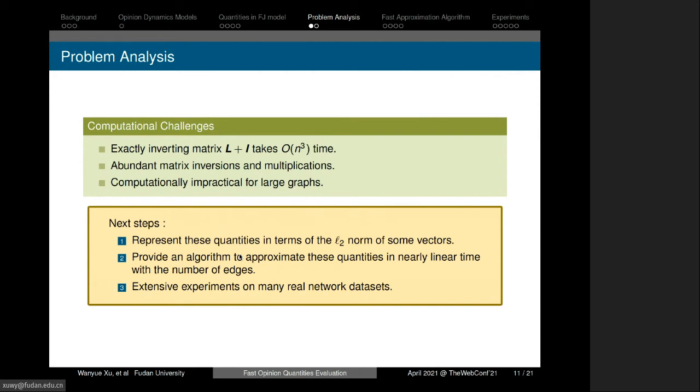Calculating these quantities will require calculating the inverse of the forest matrix. However, exactly inverting the forest matrix takes cubic time, and there are abundant matrix inversions and multiplications in the whole calculation process. It is computationally impractical for large graphs. Thus, we need to avoid matrix inversion and make it appropriate for social graphs with millions of nodes.